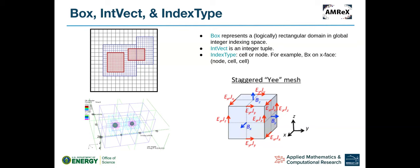The Box also has a concept of index type — whether it's cell-centered or nodal. Here is an example of a staggered Yee mesh, where the B field is on the face. For example, BX is on the X face, so it's nodal in the X direction but at the cell center in Y and Z. The mesh on the left is a cartoon version, and on the right is from a real white dwarf merger simulation.